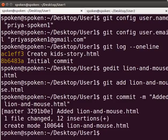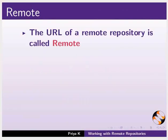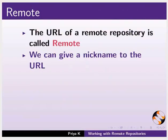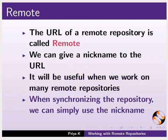Next, we have to synchronize the local repository with the main remote repository. Before synchronizing, we will learn about remotes. The URL of a remote repository is called a remote. We can give a nickname to the URL. This will be useful when we work on many remote repositories. When we synchronize the repository, we can simply use the nickname instead of typing the full URL.